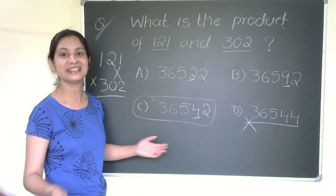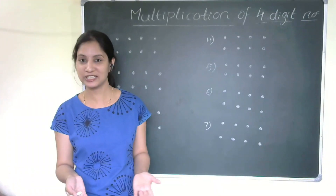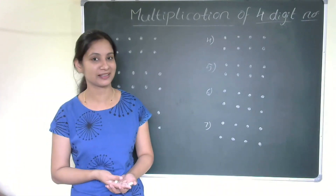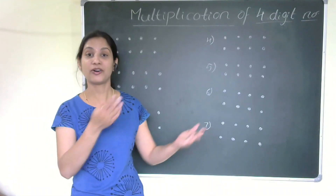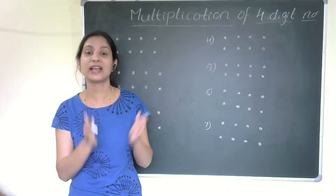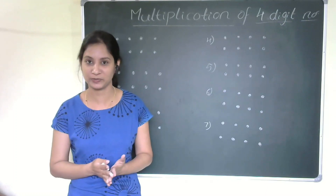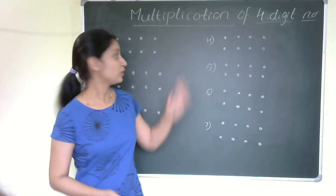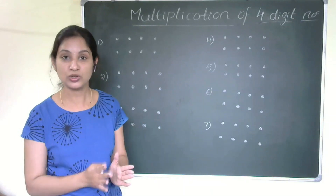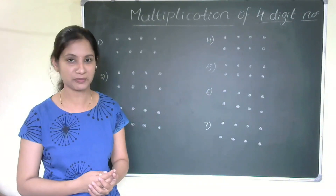Now let us learn multiplication of four-digit numbers in this video. We have already learned multiplication of two-digit and three-digit numbers using the crisscross method, following general steps. Here are seven steps in order to find the solution for multiplication of four-digit numbers.